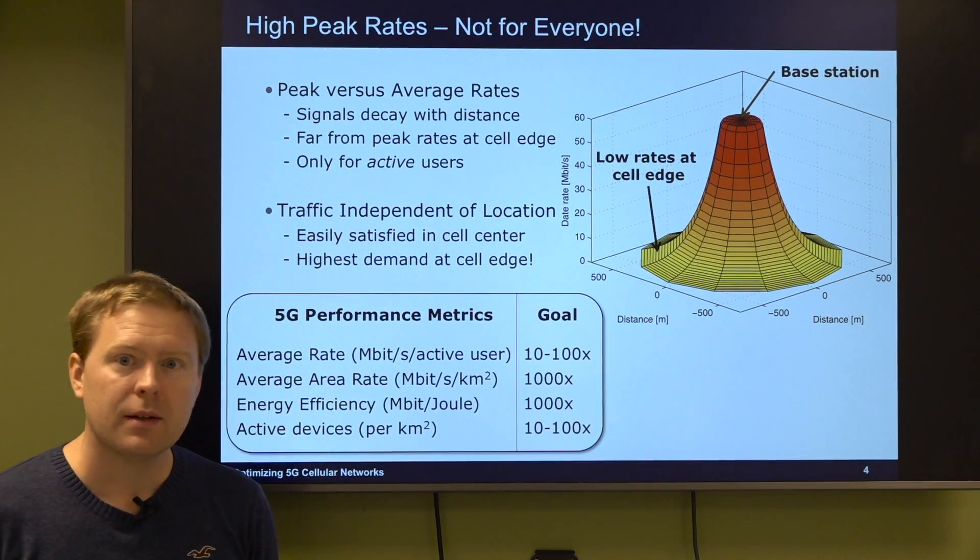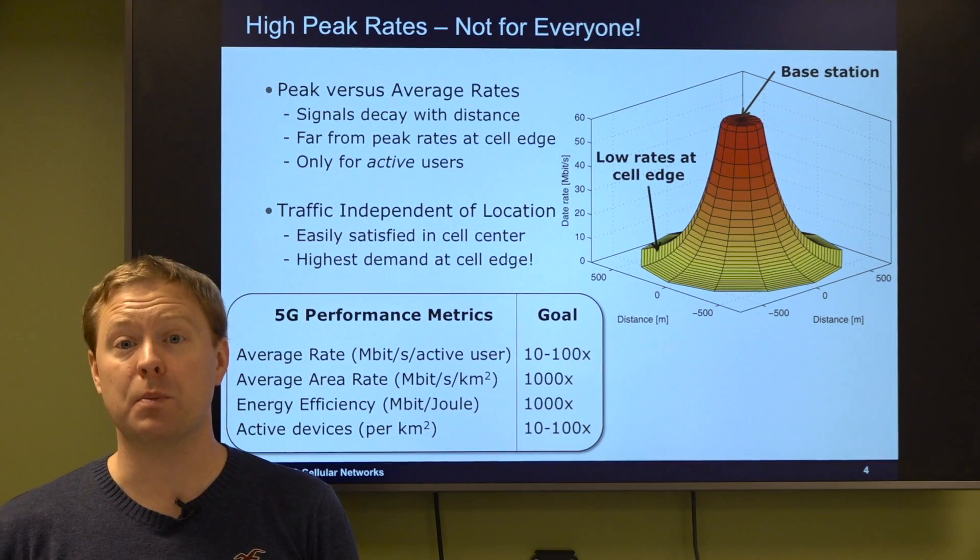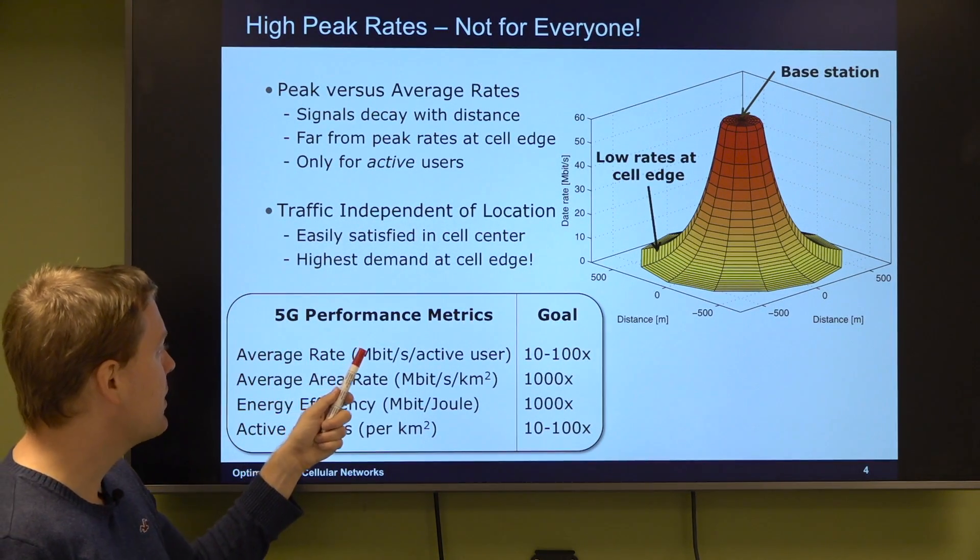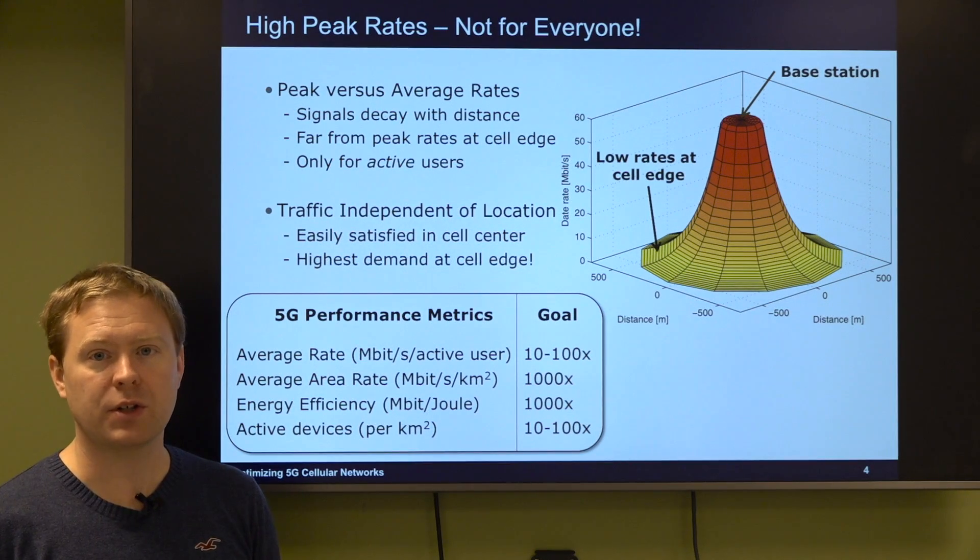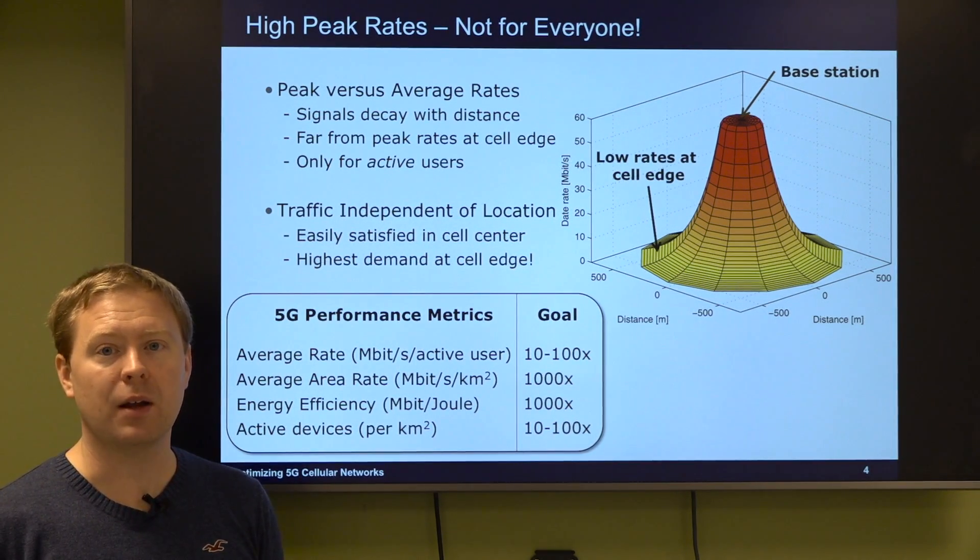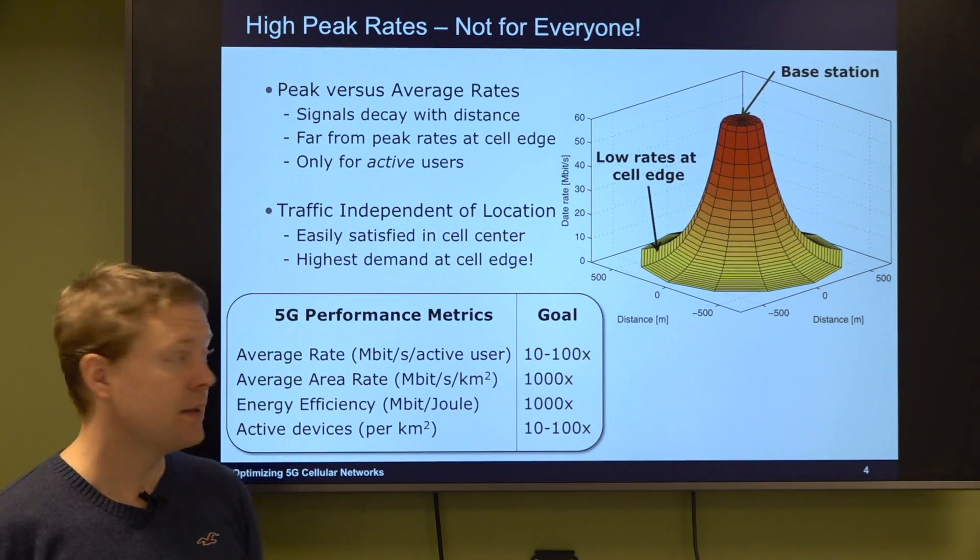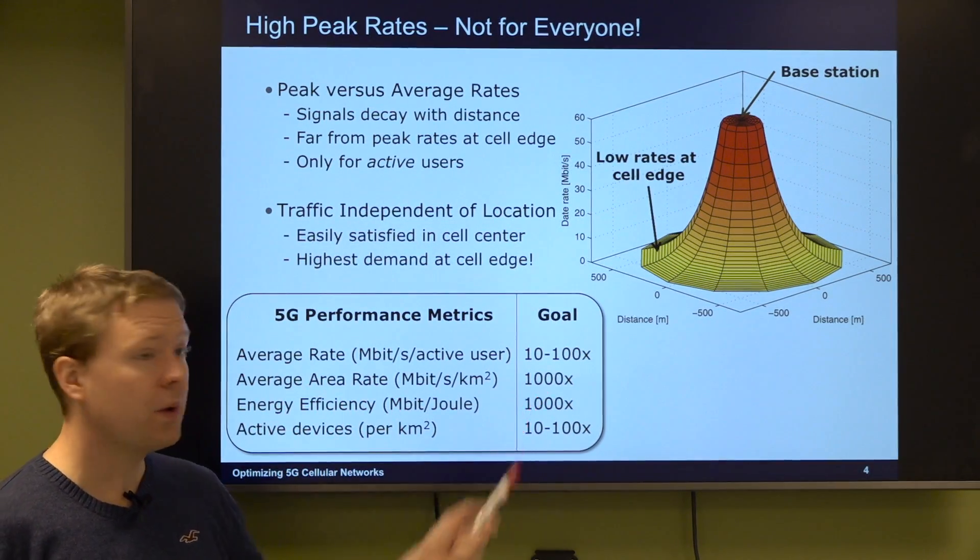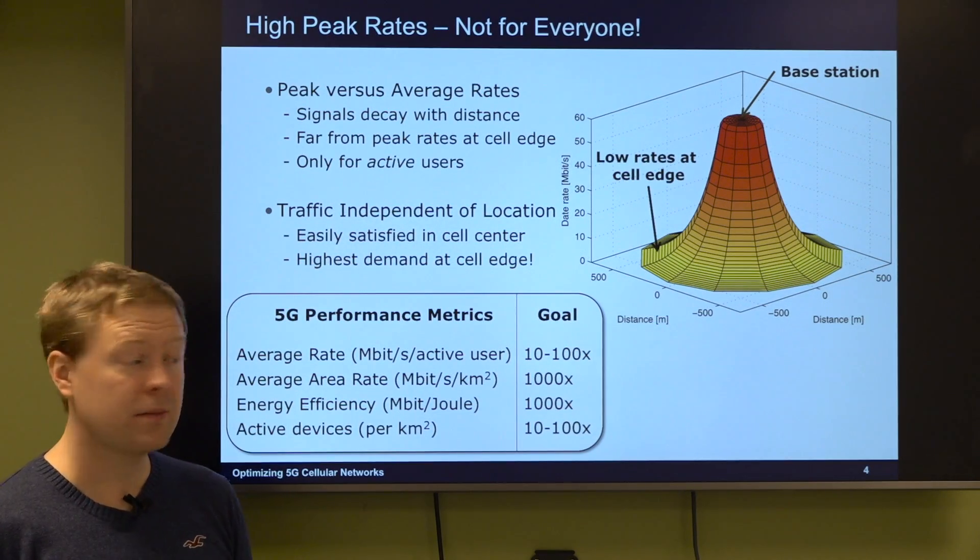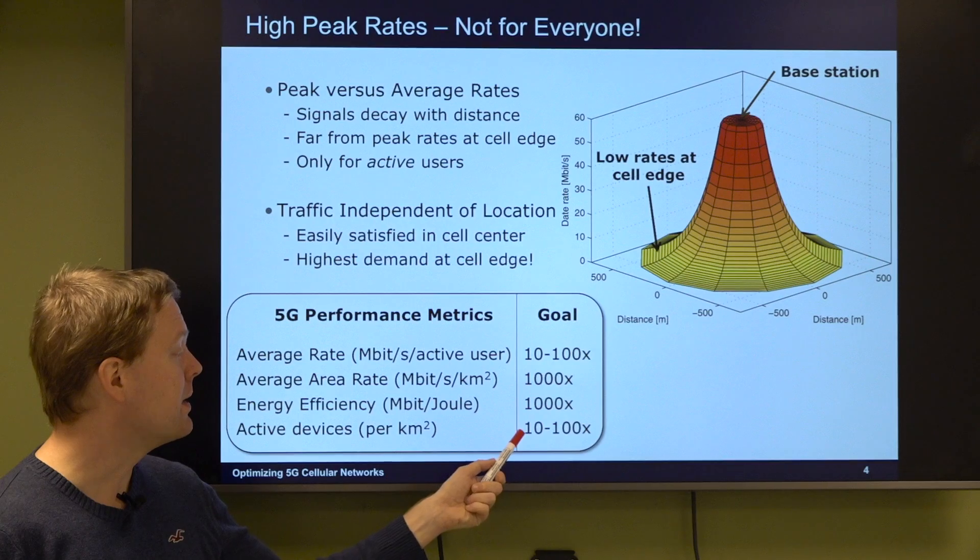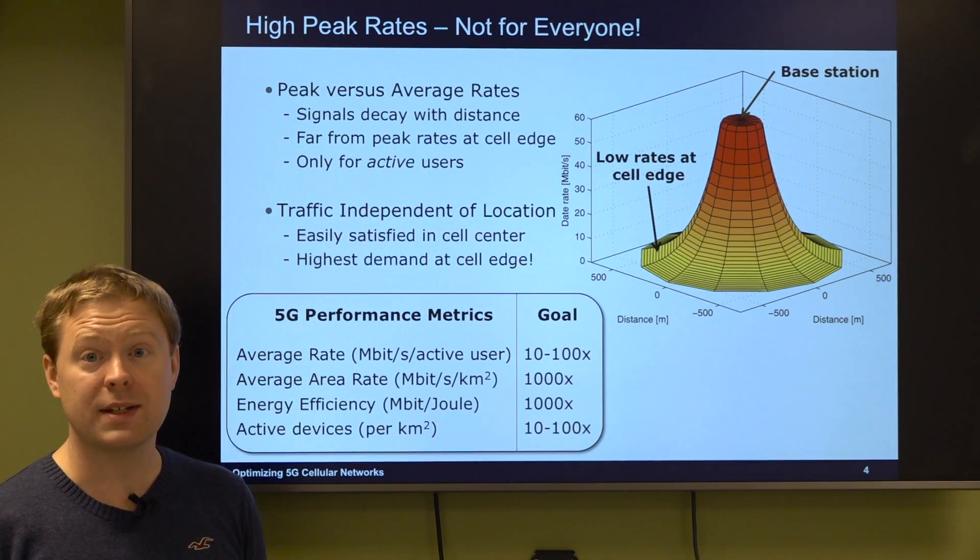For that reason when 5G was designed we talked about a number of other performance metrics in addition to peak rates. For example the average rate measured in megabits per second per active user should grow by 10 to 100 times. The average area rate in megabits per second per square kilometer should grow by 1000 times. The energy efficiency measured in bits per joule should also grow with 1000 times. And the number of active devices per square kilometer should grow by 10 to 100 times.